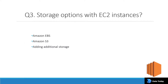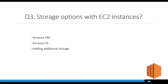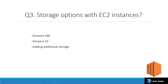Now, what are the storage options available with EC2? There are four options: Amazon EBS, Amazon S3, EC2 instance store, and additional storage. Let's talk about EBS first — it is a durable, block-level storage volume that can be attached to a running EC2 instance.